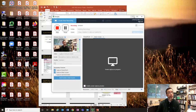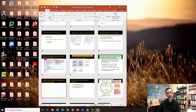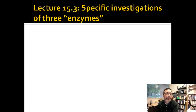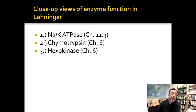Good afternoon. We have some finishing up to do in both chapters 11 and 6. These are specific stories about how enzymes work, and we want to cover three stories. We're going to start with the chapter 11 story because we just finished talking about that, and then we'll move on a little bit more to chymotrypsin and finally hexokinase.